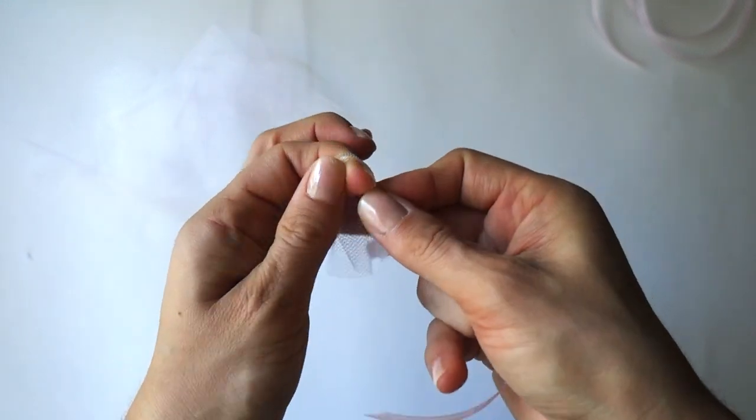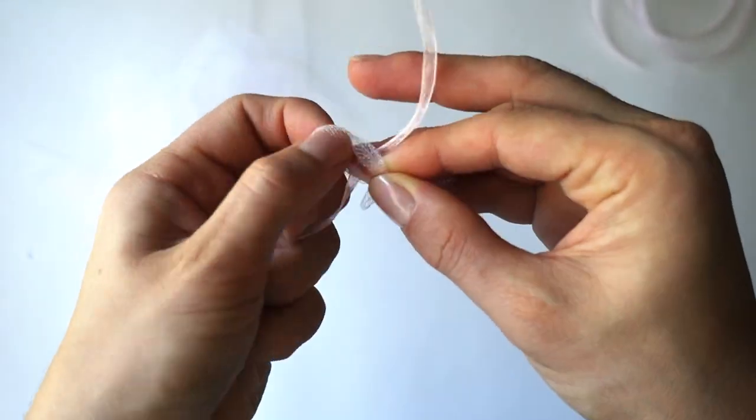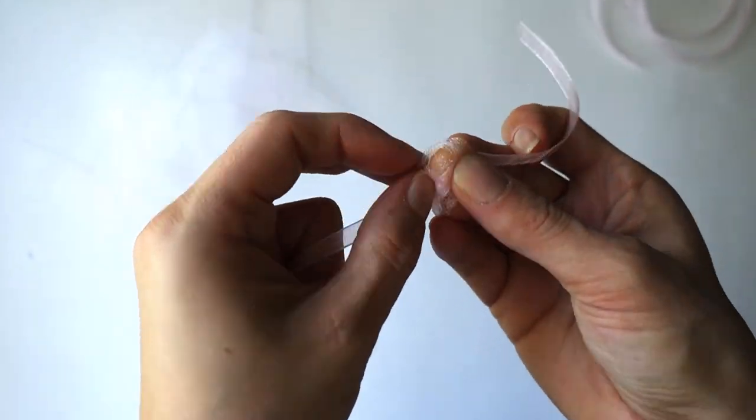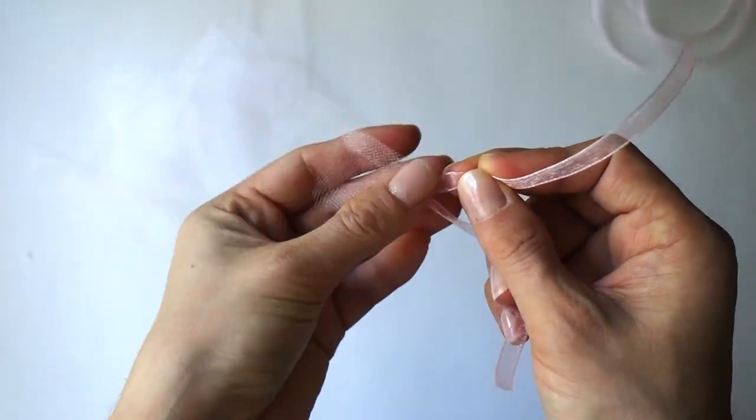Tie the strips onto the ribbon. Fold the ribbon in half and put the folded end under and through to make a slip knot. Repeat the process until the ribbon is full.